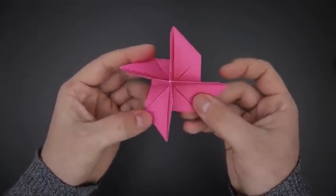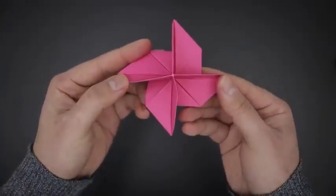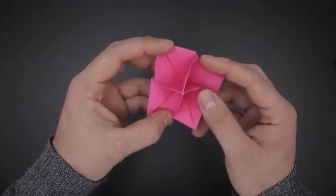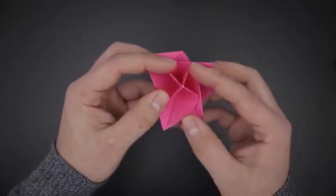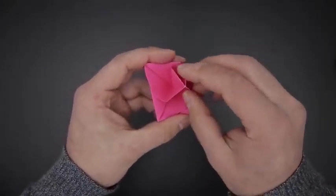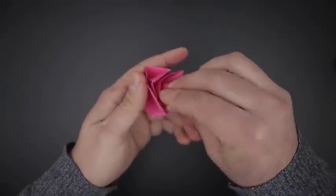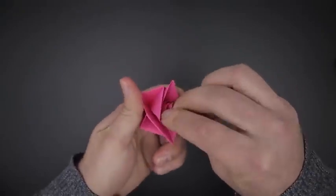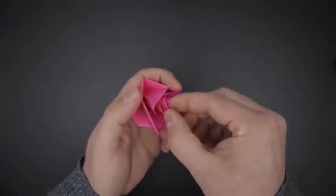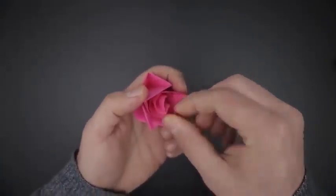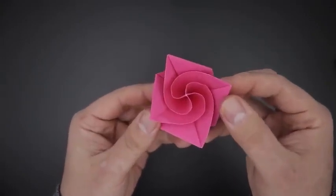Now to make the first details of the rose, we're going to have to rotate the paper in the middle, creating something like a spiral. Just bend each side, following the same direction of the previous step. After releasing, this is the result.